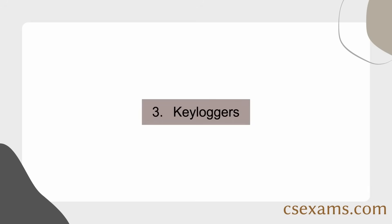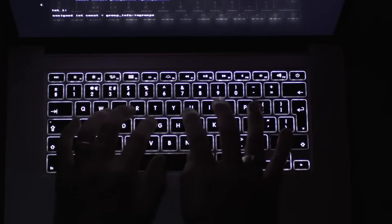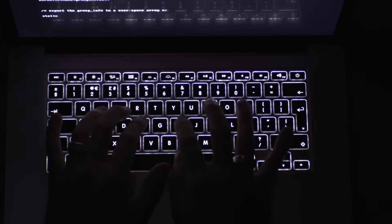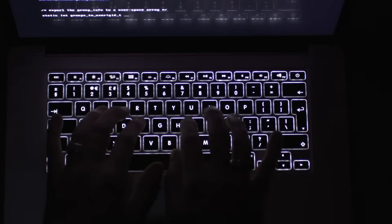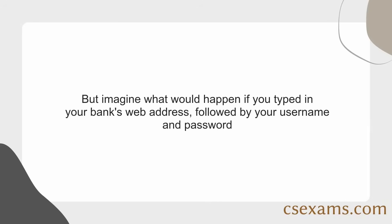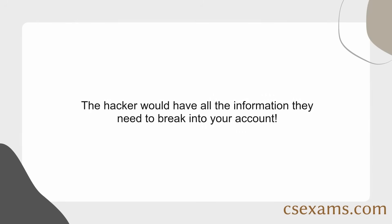Method 3: Keyloggers. Keyloggers are a type of malware that records what you're typing and sends the information back to the hacker. But imagine what would happen if you typed in your bank's web address followed by your username and password — the hacker would have all the information they need to break into your account.